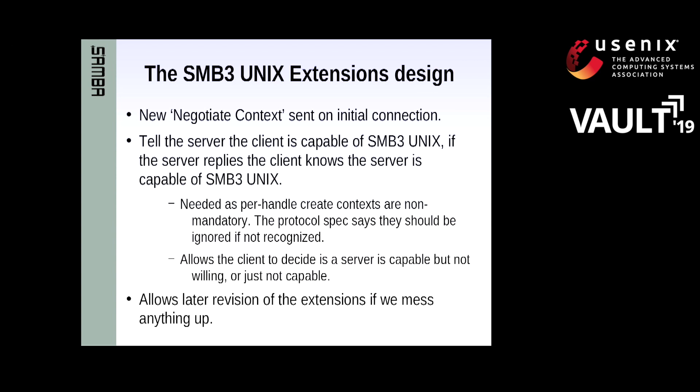How do we do the initial flip into SMB3 POSIX extensions? We send the magic create context containing a GUID. Why do we do that in a create context rather than negotiate, which is the first protocol setup? The reason we do it that way is so that if a server doesn't respond, the client knows that it won't do POSIX extensions.